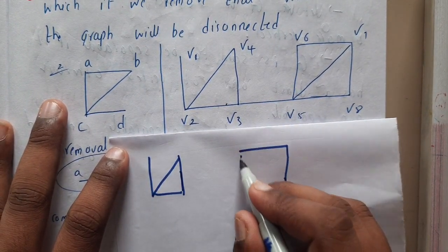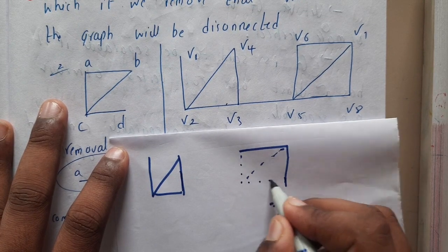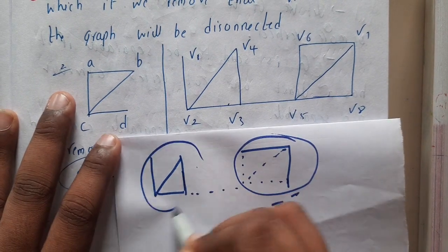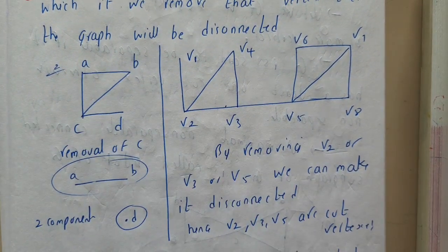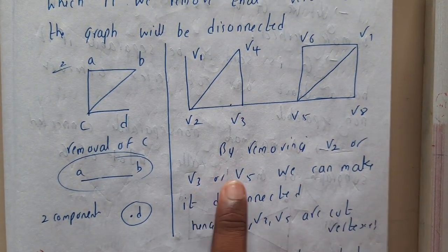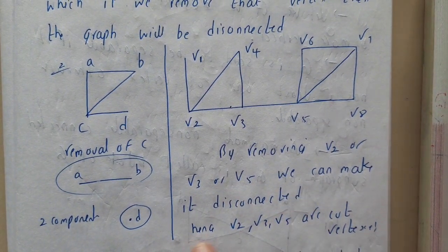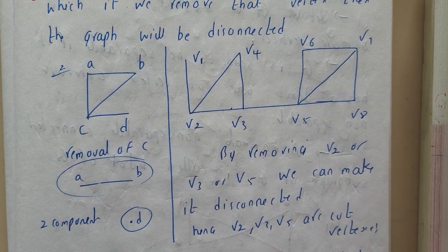So we removed v5 which resulted in a loss of two, three, and four parts. So now again this also became two parts as a disconnected graph. So by removing v2, v3, or v4, any one of them we can make it as a disconnected graph. Hence v2, v3, v4 are the cut vertices.